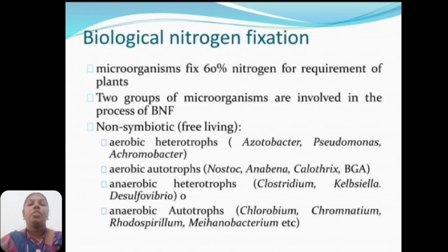Biological nitrogen fixation: microorganisms fix 60% of the nitrogen required by plants. Two groups of microorganisms are involved in the process of biological nitrogen fixation — non-symbiotic free-living organisms, including aerobic heterotrophs, aerobic autotrophs, anaerobic heterotrophs, and anaerobic autotrophs.